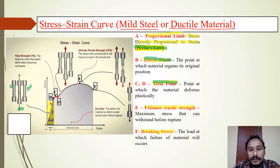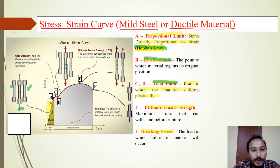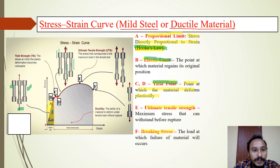The yield point is the point at which the material deforms plastically. If you apply load to the material and it deforms some distance, once the material reaches the yield point, it cannot regain its original shape and size. The length of the base material increases, and after reaching the yield point the material won't return to its original length — this is called the yield point.